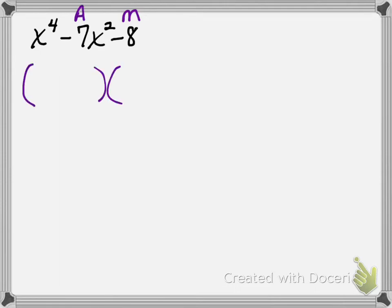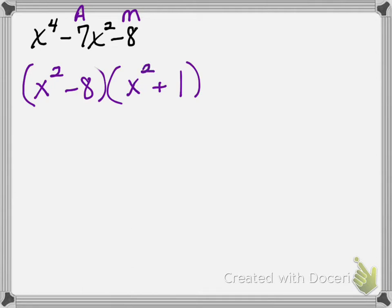I want to multiply to get negative 8 and add to get negative 7. Hopefully you're thinking negative 8 and a positive 1. So this is going to be x squared minus 8 and x squared plus 1, because x squared times x squared is x to the fourth. That gives me a positive x squared and a negative 8x squared, which gives me the negative 7x squared in the middle.